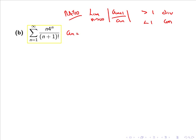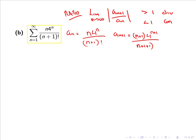Here a_n, the general term, is n multiplied by 4 to the n, all divided by (n+1) factorial. a_{n+1} is obtained by replacing n with n+1 in the term a_n, so we have n+1 multiplied by 4 to the power of n+1, all divided by (n+1+1) factorial, or simply n+1 times 4 to the n+1 all divided by (n+2) factorial.